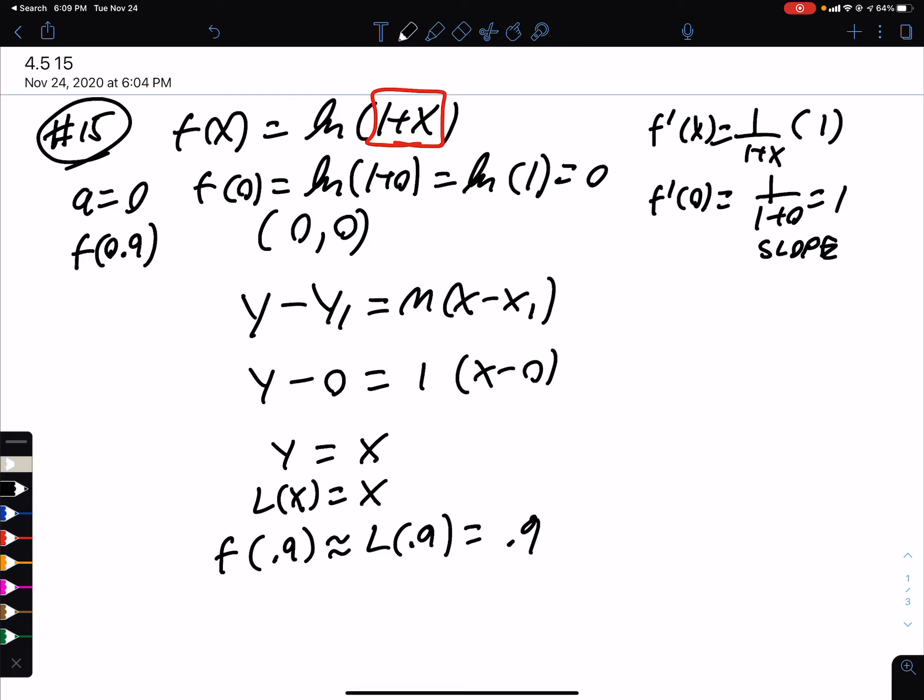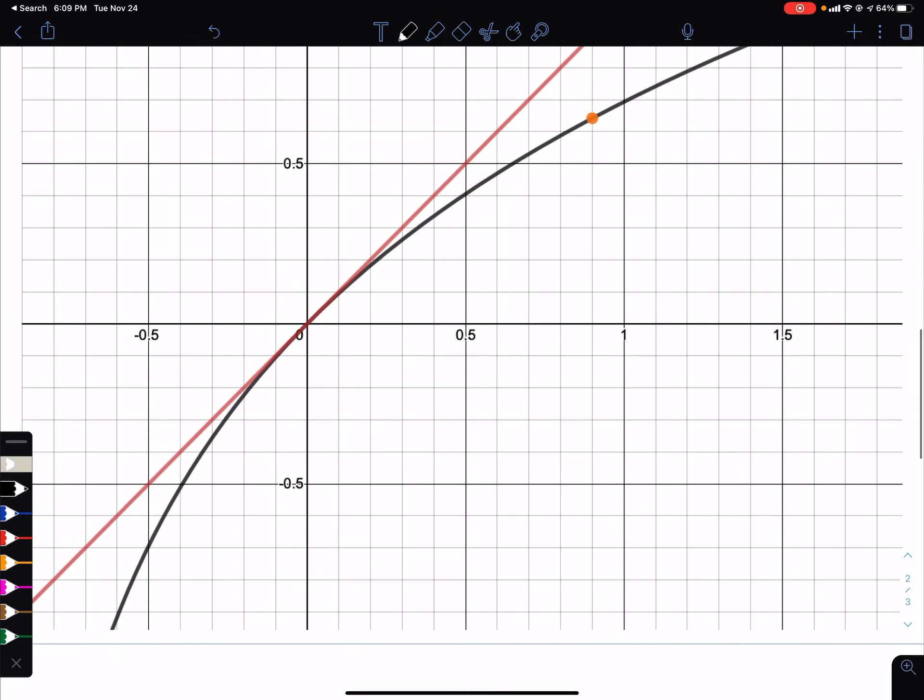What's going on here? Let's look at the picture. So they asked you to graph these to help you figure out what's going on. So let's look at the graph. So here's the ln of 1 plus x.